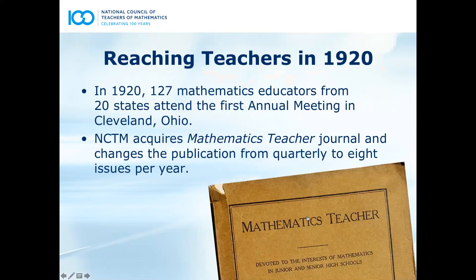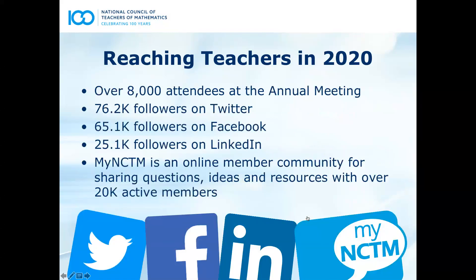In 1920, when NCTM started, it actually started as part of a group from the National Education Association, and it has its roots in Chicago, which is why we are starting the Centennial Celebration there. But now the headquarters is in Reston, Virginia. The mission of NCTM has always been to support teachers and advocate for high quality mathematics teaching and learning for each and every student. In 1920, there were 127 math educators from 20 different states that organized for the first annual meeting. Then in 1921, they acquired the Mathematics Teacher Journal, which became the mechanism through which teachers communicated and shared ideas. But today is very different. We have over 8,000 people that attend annual meetings, over 76,000 followers on Twitter, over 65,000 followers on Facebook, and over 25,000 followers on LinkedIn.